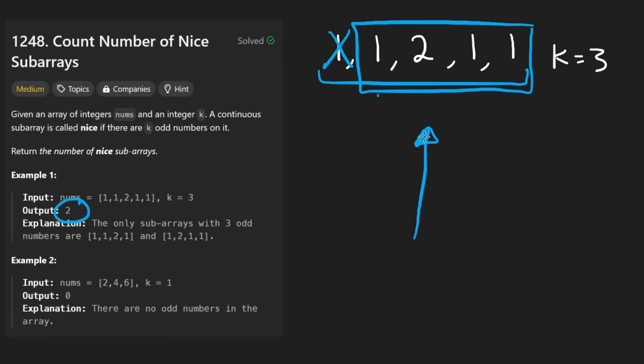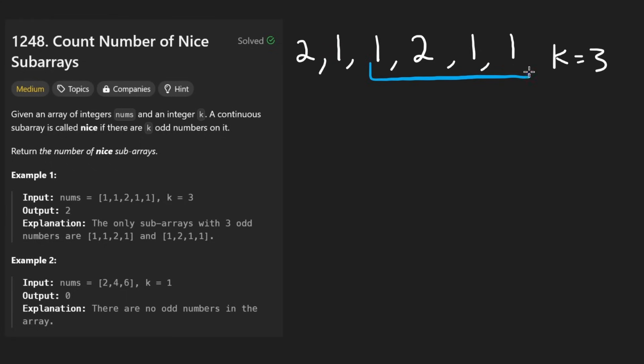It works for the first example, but let me show you an example where it doesn't work. All I'm going to do is add a two value to the beginning. So now I can count one, two, three subarrays, but I'm pretty sure our solution with two pointers, two pointer sliding window solution is only going to find two of them.